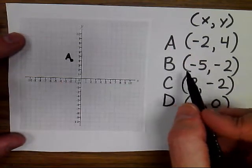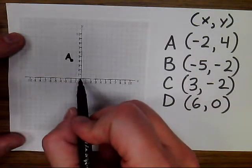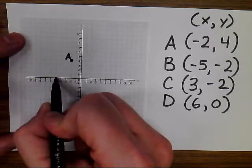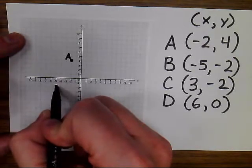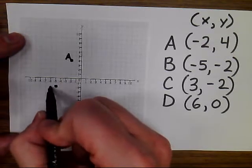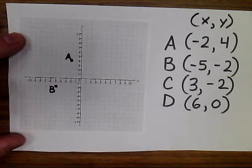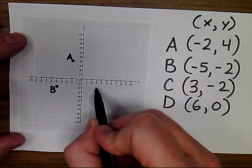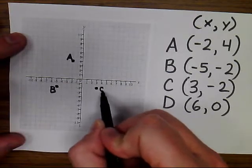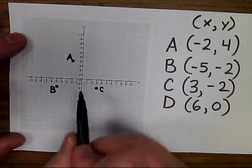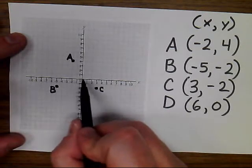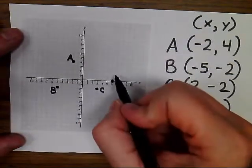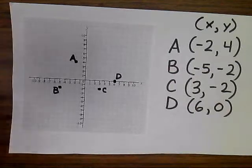For letter B, I'm going to start again at the origin, I'm going to move to the left 5 units, that's my x value, and then I'm moving down 2 units for my y value, and there's point B. Point C is going to be over positive 3 and then down 2. Letter D is going to start at the origin, moving over 6 units, and then since it's got zero as that second term, it's going to stay right on the x-axis.